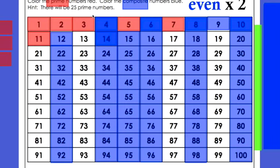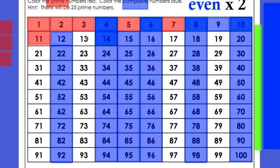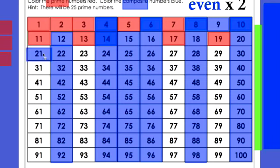That leaves us with some others to think about. We know 9 is composite. 10 is composite because it's even and also a five — 2 times 5. Then 11 is prime — there's only one way to get 11: 1 times 11. 12 is composite: 1 times 12, but also 2 times 6 and 3 times 4. What about 13? There's only one way: 1 times 13. Then 17 — only 1 times 17. 19 — only 1 times 19. But 21 has 1 times 21 and also 3 times 7, so that makes it composite.